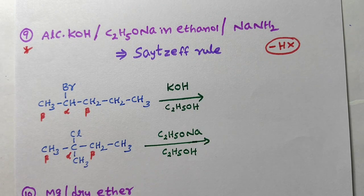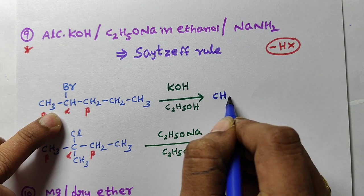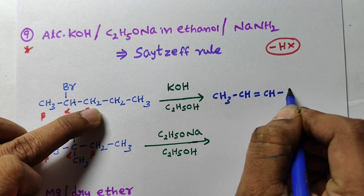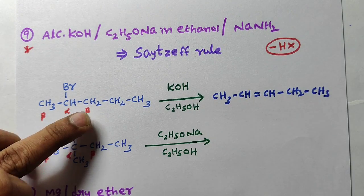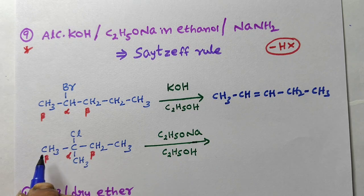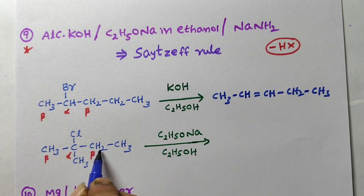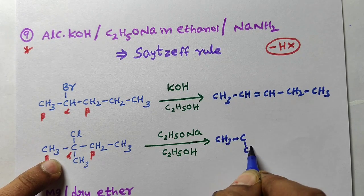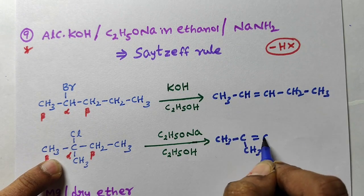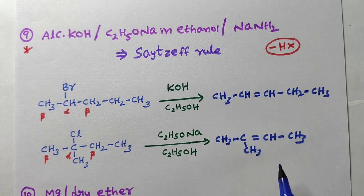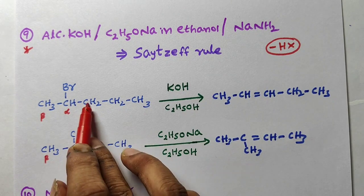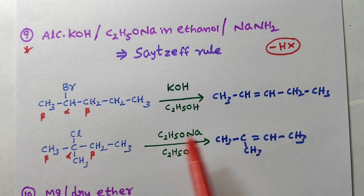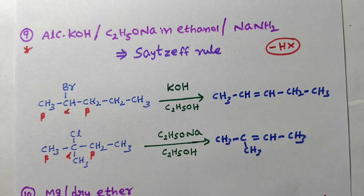For example, take a haloalkane — two hydrogens on one beta carbon, one hydrogen on the other. Hydrogen is eliminated from the beta carbon with fewer hydrogens, giving the more substituted alkene as the major product. For instance, from the appropriate haloalkane, 2-pentene or 2-methylbut-2-ene is the major product. HCl or HBr is eliminated. Remember: hydrogen is eliminated from the less hydrogen-containing beta carbon to give the more substituted, more stable alkene due to hyperconjugation.